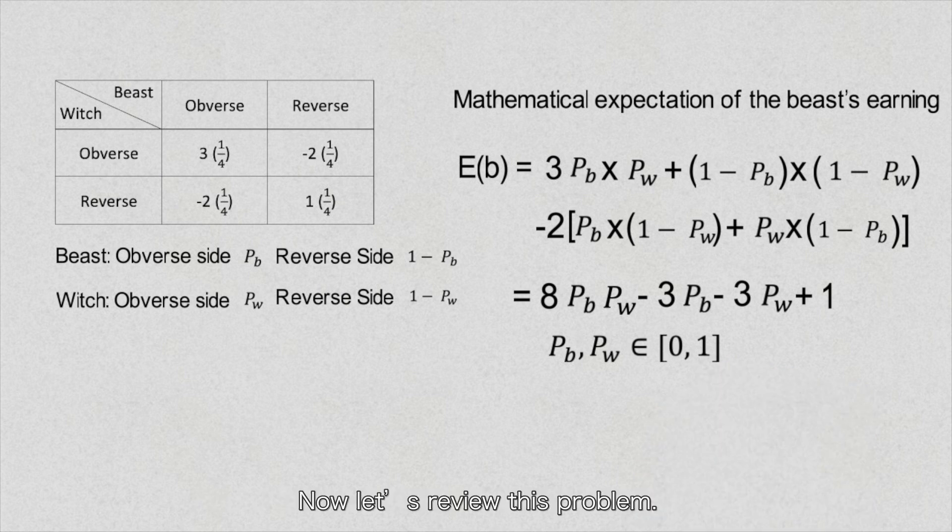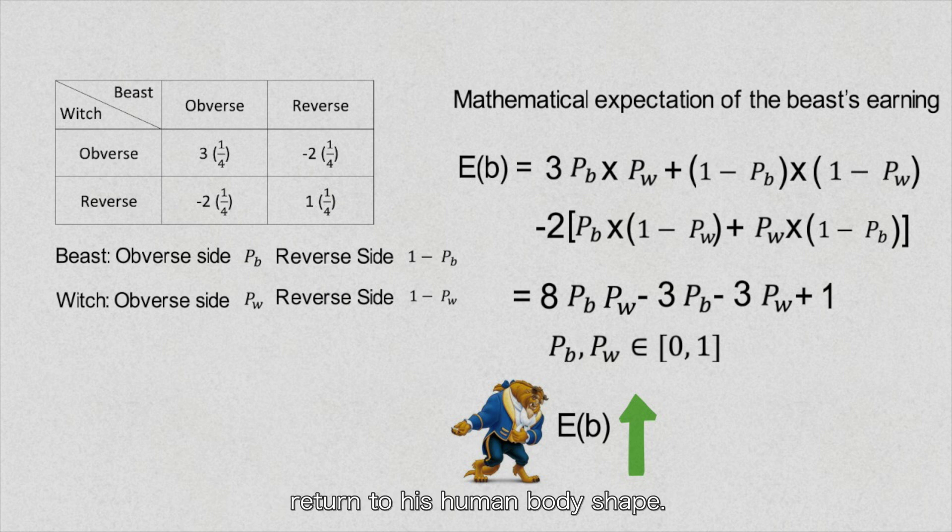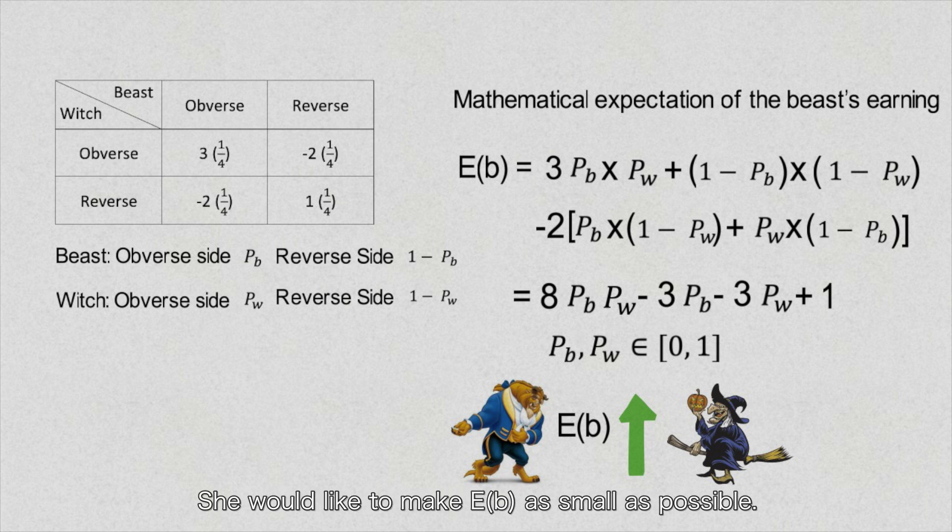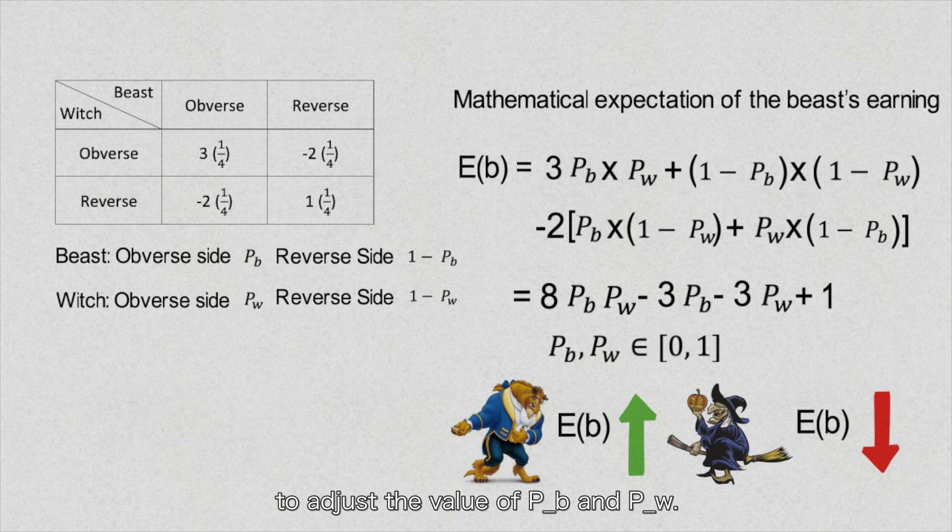Now let's review this problem. The beast wants to make his expectation as big as possible to earn more money and return to his human body shape. However, the witch wishes the opposite. She would like to make the expectation of the beast E(b) as small as possible. The only thing they can do is to adjust the values of P_b and P_w.